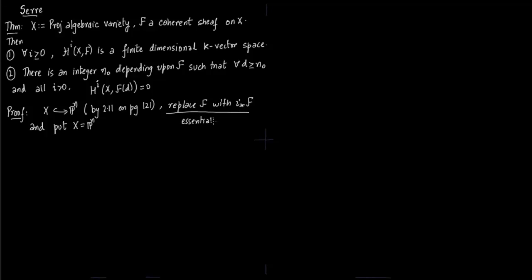This construction we have explained before but it is also given on page 121, 2.11. Essentially i*F only acts on components of X in P^n, so i*F is a sheaf on P^n but it acts only on components of X and acts precisely the same way as F would.